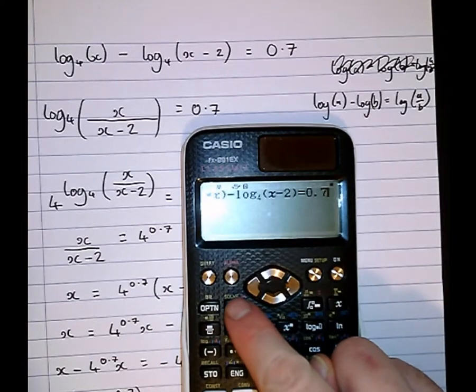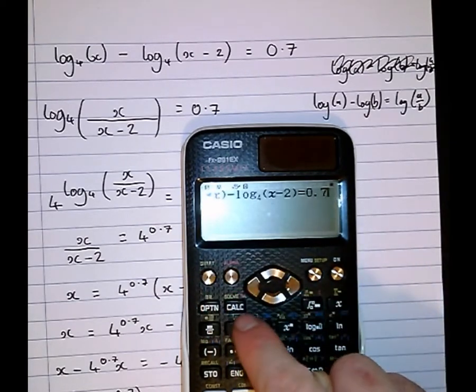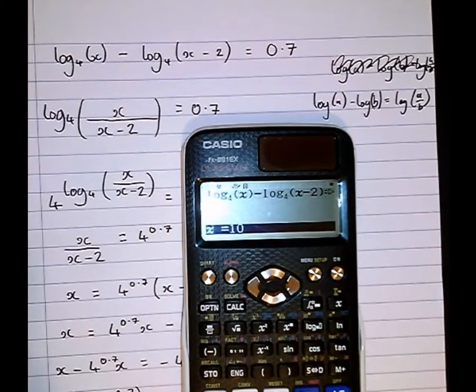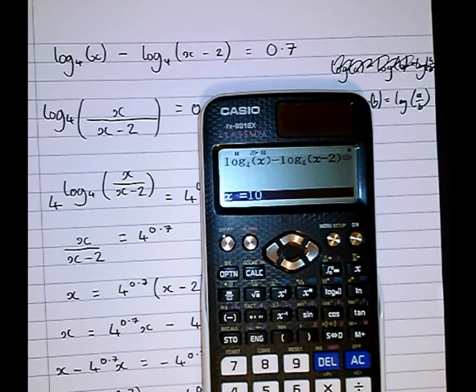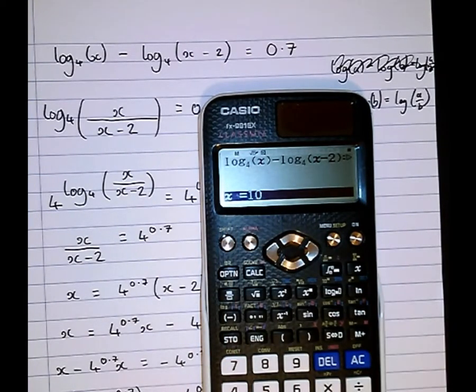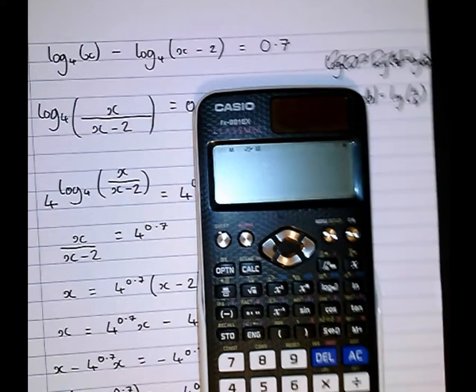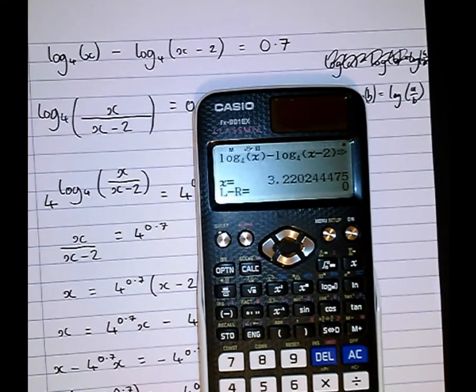Then we're going to solve using this yellow solve button, so shift and press the calc button which gives us a solve function. Now x equals 10 isn't the answer, what this calculator function does is it searches for an answer from the point here, so if we press equals, 10 is just our start point for the search. Press equals then it will give us our answer which is indeed 3.22, we've got it correct.